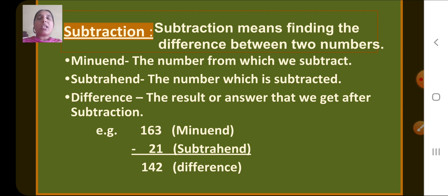Now, what is minuend? The number from which we subtract. Then subtrahend — the number which is subtracted. And what is difference? The result or answer that we get after subtraction is called difference.